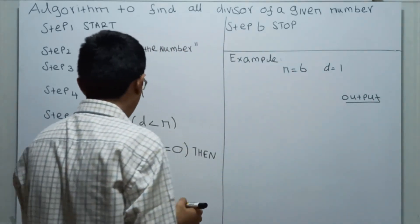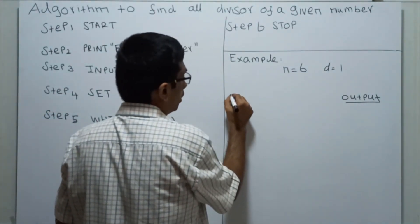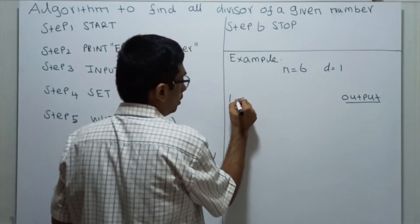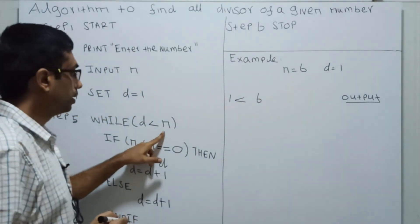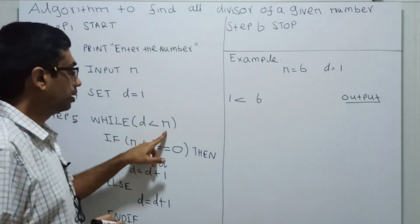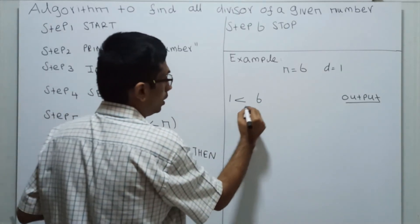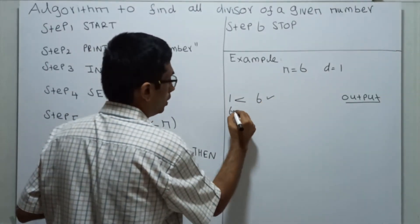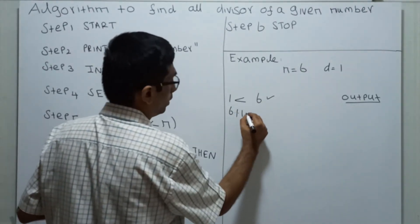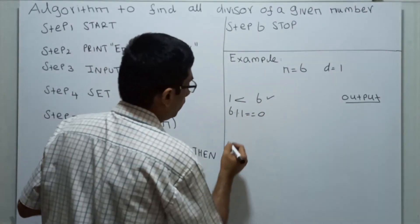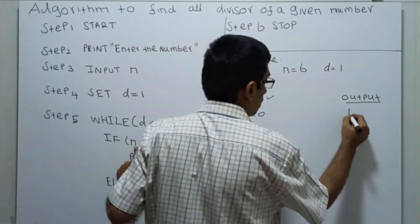First, what will it do? It will check: is 1 less than 6? This is true. Then it will check 6 mod 1 — the remainder equals 0. We are dividing 6 by 1, the remainder equals 0. Then it will print the value 1.